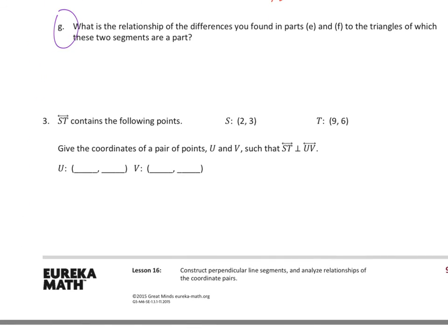So the last part says line ST contains the following points: 2, 3, and 9, 6. Give the coordinates of pair of points U and V, such that ST and UV are perpendicular. So what you'll want to do with this, there's a couple ways you can handle it. You can figure out the relationship between those and come up with your points, or you can take those coordinates and plot those on a coordinate plane, and then find your right triangle measurements for base and height to figure out where the perpendicular will come in. A couple different options for it, but I'm going to leave that up to you because there's a couple ways to solve that one.